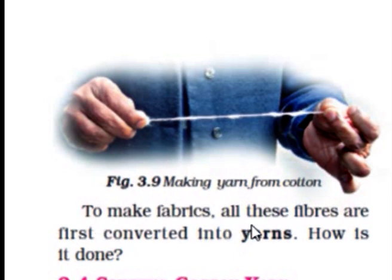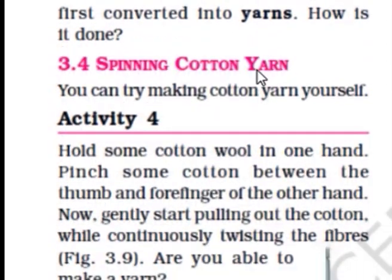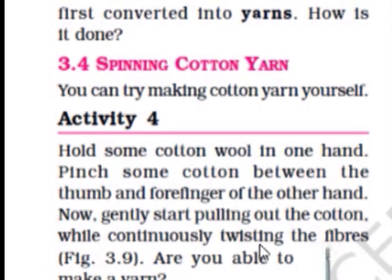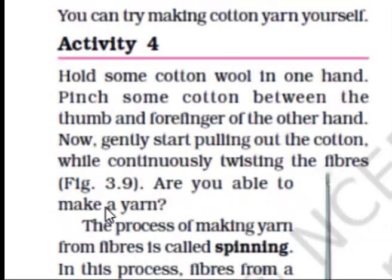To make fabrics, all the fibers are first converted into yarns. Now let's see the spinning of cotton yarn. You can try making cotton yarn yourself. Activity 4: Hold some cotton wool in one hand. Pinch some cotton between your thumb and forefinger of the other hand. Now gently start pulling out the cotton while continuously twisting the fibers. Are you able to make a yarn? The process of making yarn from fibers is called spinning.